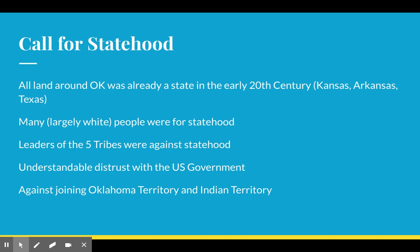All of the land around Oklahoma — Texas, Arkansas, Missouri, Kansas, Colorado, New Mexico — are all states by the early 20th century. Many people, largely the white people that settled in Oklahoma, are going to want to become a part of the United States. You could probably understand why many of the Native American tribes were against becoming a state — they valued their independence and their cultural heritage. They were nervous that that was going to be taken away from them if they became a part of the United States and not a part of their own tribal organization.